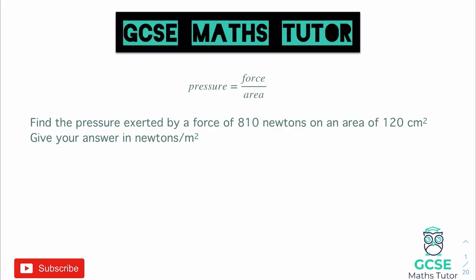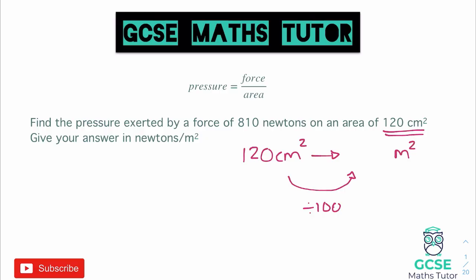Since we need to give our answer in metres squared, we need to convert 120 centimetres squared into metres squared. To think about the normal conversion from centimetres to metres — if it was just 120 centimetres, we would divide by 100. When it comes to area units, converting centimetres squared to metres squared, we do the same thing but instead of dividing by 100, we divide by 100 squared. So 120 divided by 100 squared gives us 0.012 metres squared.